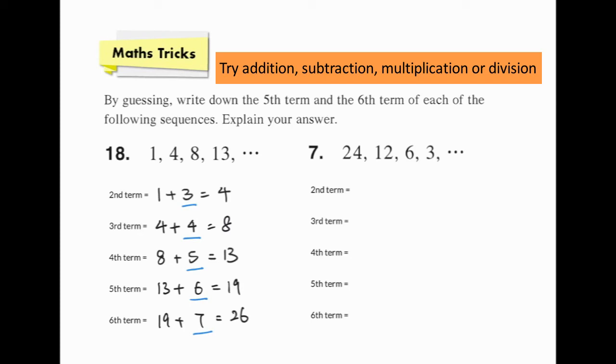Let's try subtraction first. Think about the second term. We get 12 by 24 minus 12. We get 6 by 12 minus 6. It seems that we cannot use subtraction to determine the pattern.